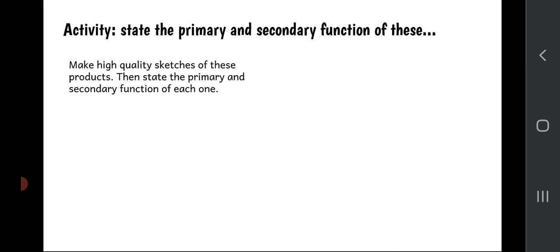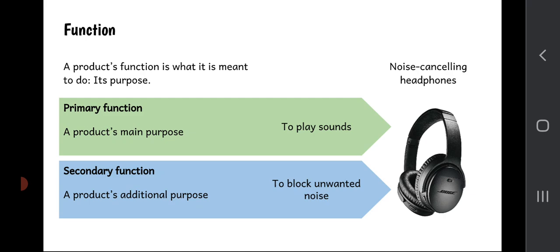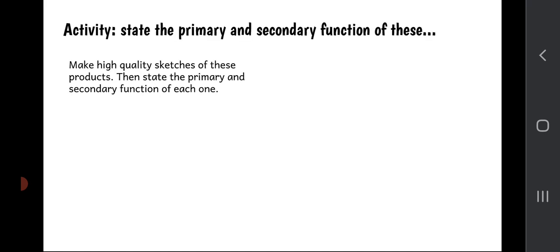So here's an activity for you. Pause the video, we need that slide copied into the jotter. Okay, now let's go forward. So I've got an activity for you—objects are going to come up here and I want you to make high-quality sketches of these products and then state the primary and the secondary function of each one. Do that in your jotter or on a piece of paper. So here are the objects.